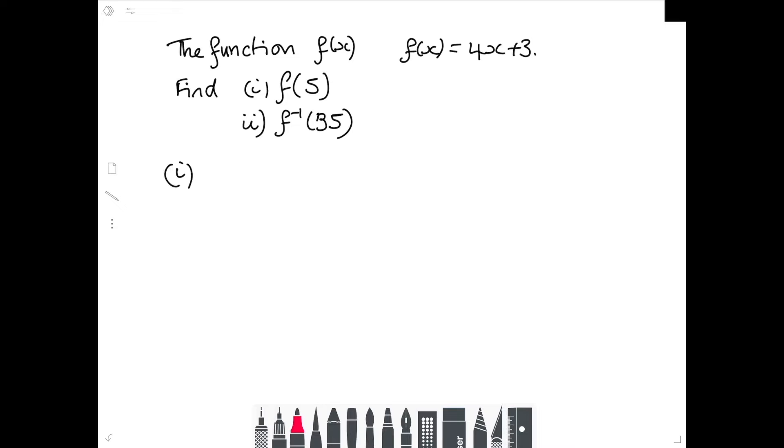Okay, for part 1, that's just your ordinary function. So my ordinary function, to find out what happens when I put 5 in, in place of the X, I'm going to write the number 5. So it's 4 times 5 plus 3, which is 20 plus 3, which is 23. That must seem quite straightforward now.